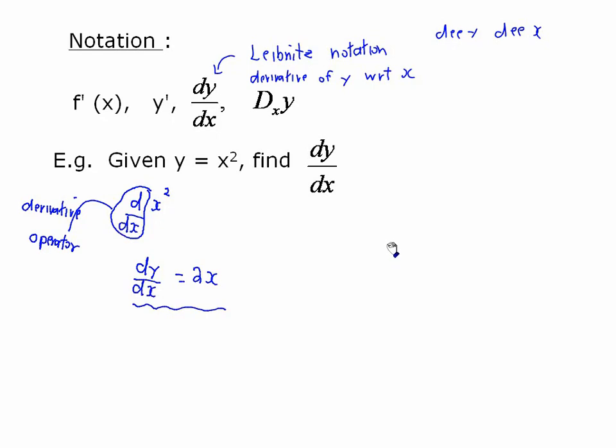So the derivative of y with respect to x is equal to 2x. So this represents a formula that we would use in order to find the derivative of, or to find the slope of the tangent line for all x values along that function y is equal to x squared.